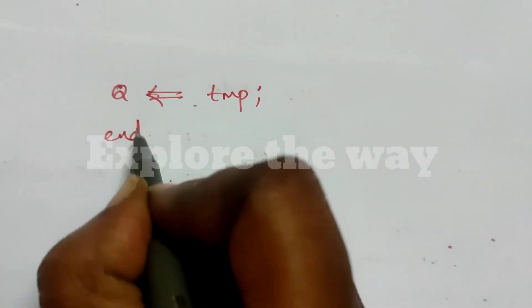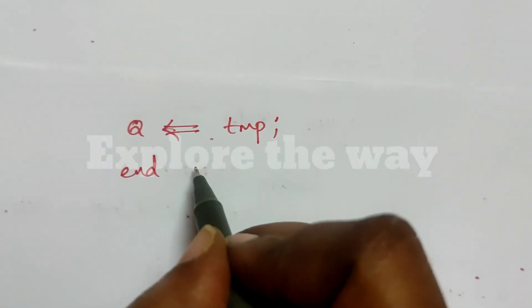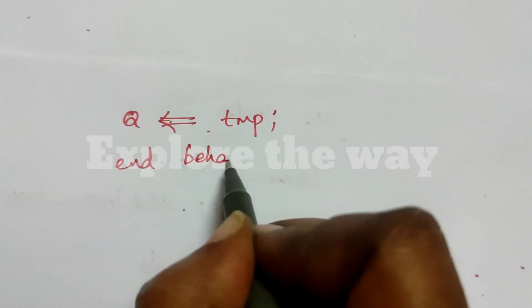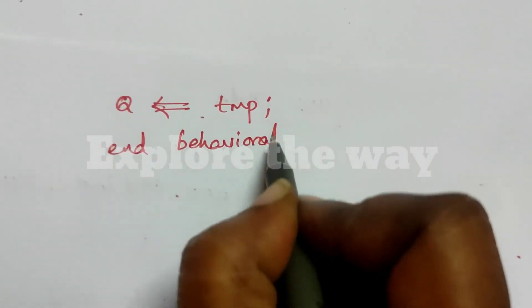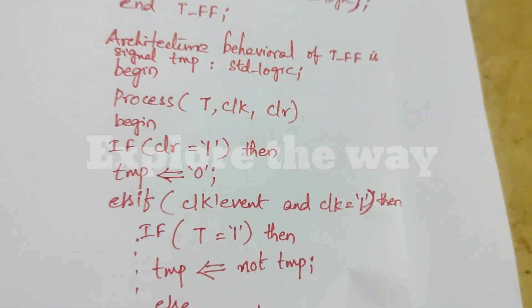Now, you can end the architecture also. This is the VHDL code for T flip-flop.